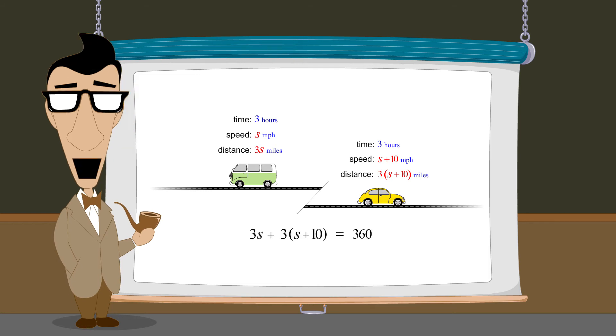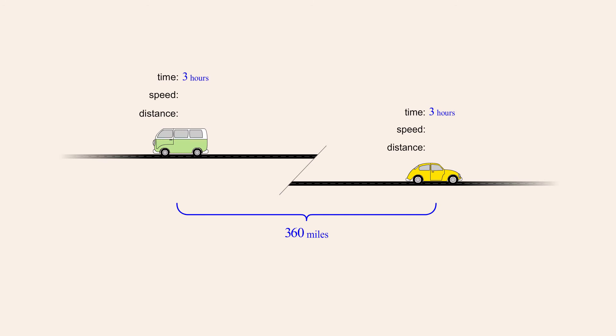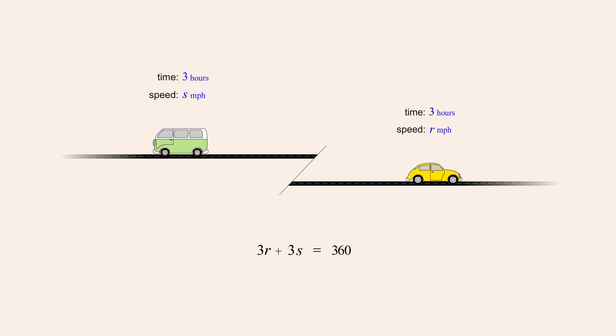But once again, this problem can also be solved by creating a system of two equations in two variables. To do this, we assign the variables s and r to represent the speeds of the bus and the car. Since distance equals speed times time, the distances traveled by the bus and car are 3s miles and 3r miles. We then create two equations: the first states that the distance traveled by the car plus the distance traveled by the bus equals 360 miles; the second states that the speed of the car is 10 miles per hour faster than the speed of the bus.